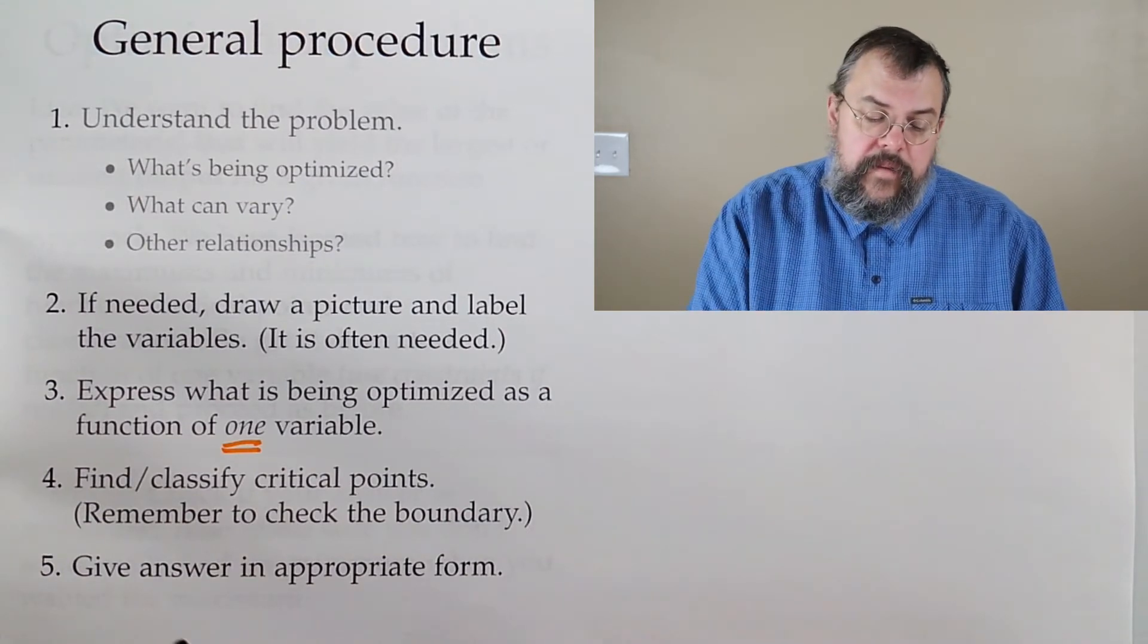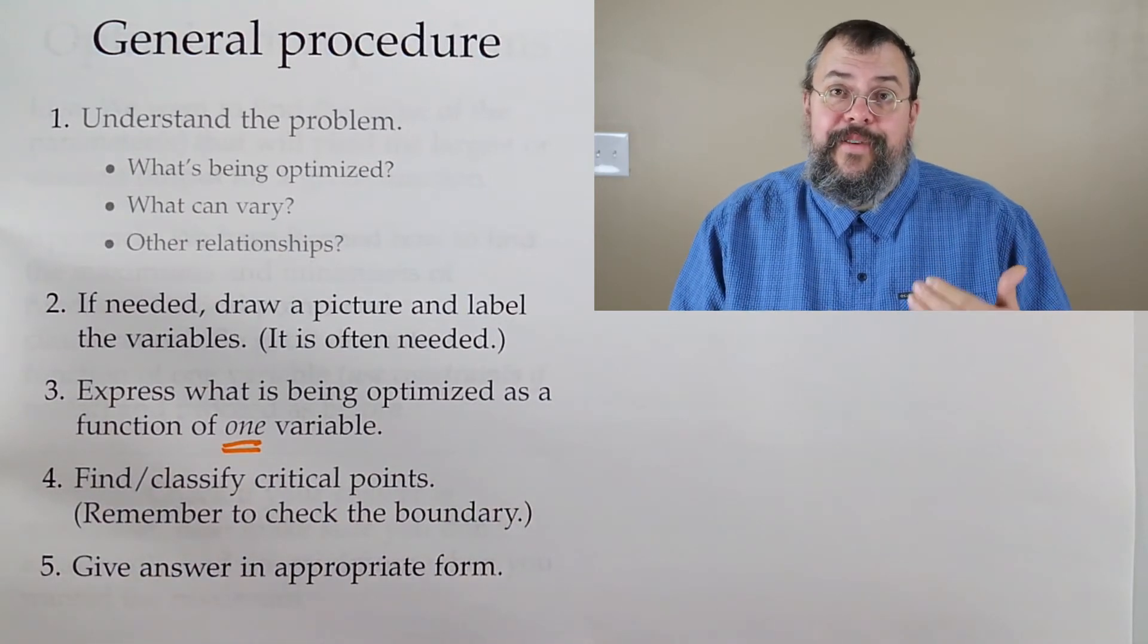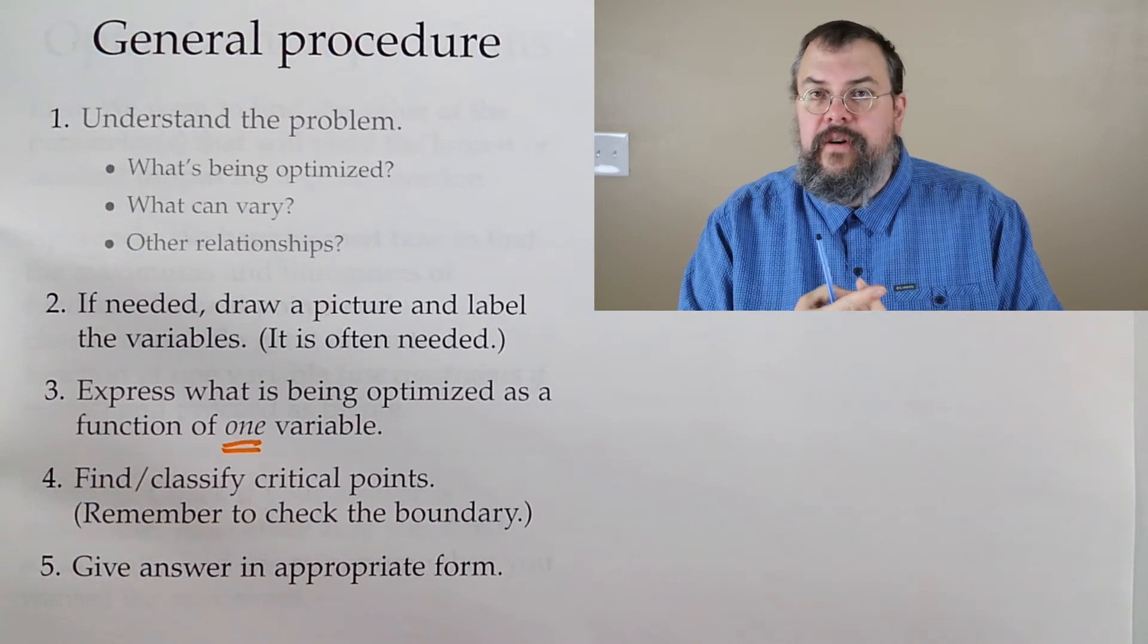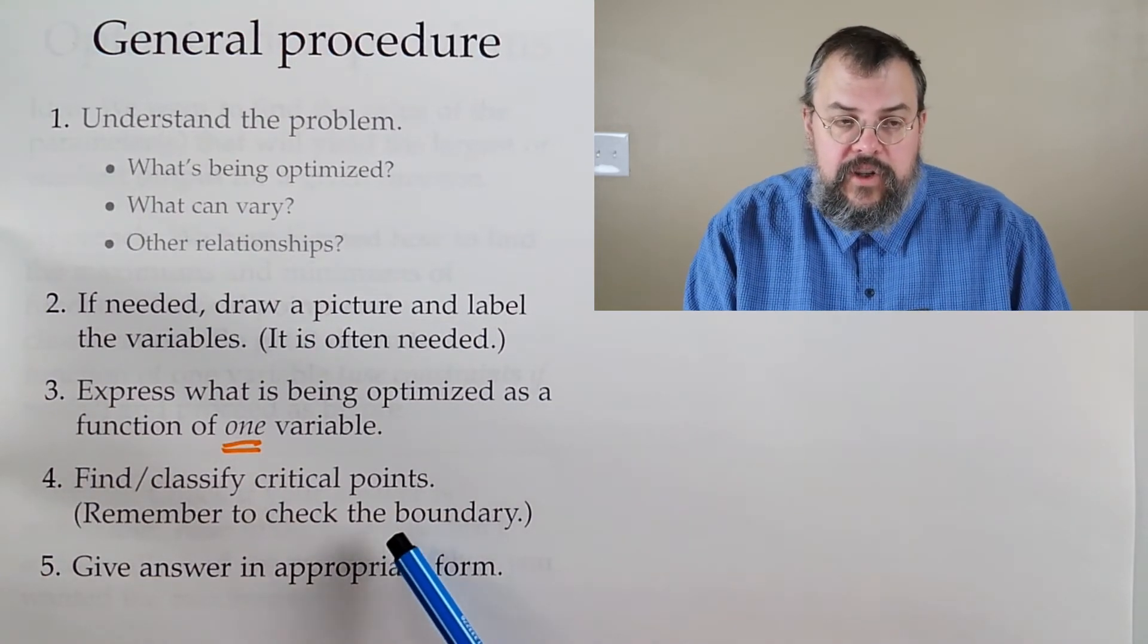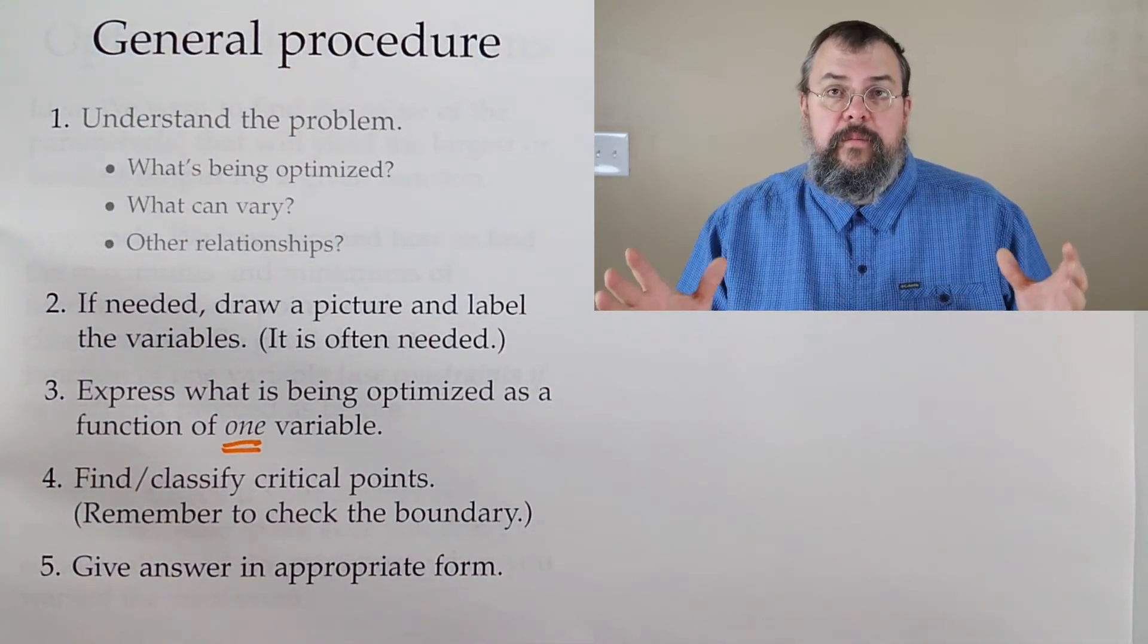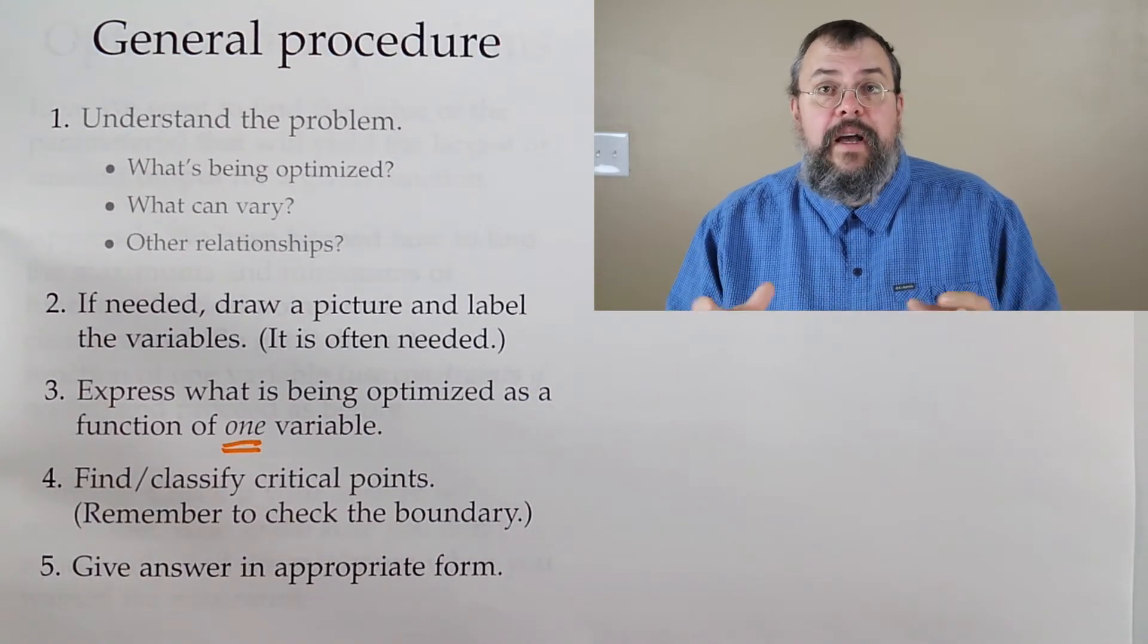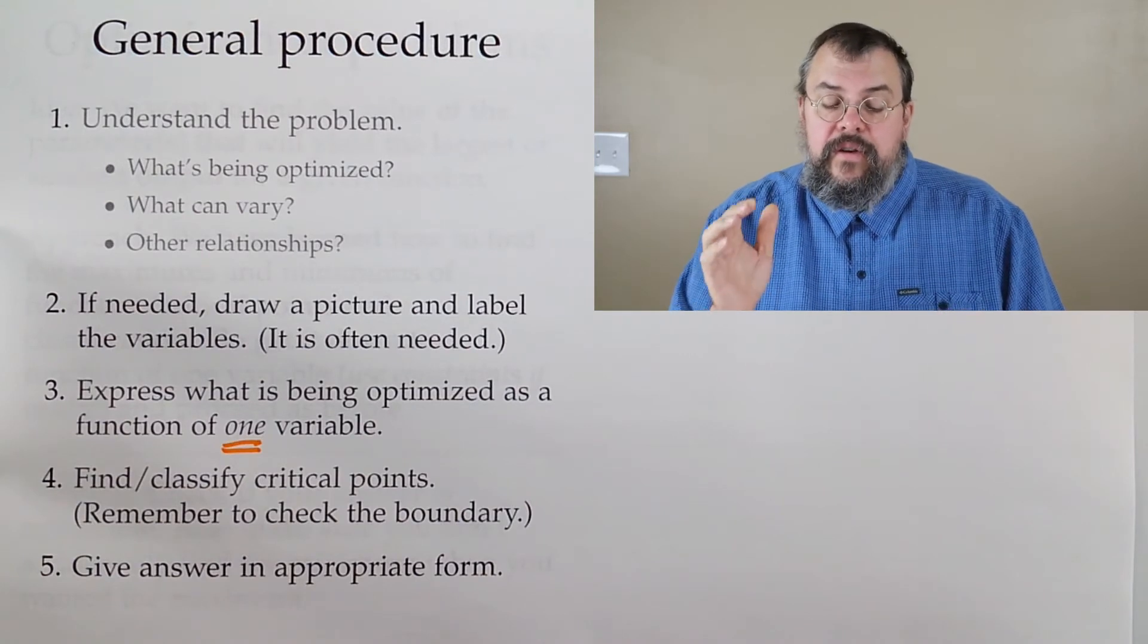Now we're ready to do what we've been learning. How do you find and classify critical points? Take the derivative, set it equal to zero, maybe worry about whether it's undefined. And don't forget to check the boundary. Some problems have a natural boundary built in, and it's possible that the best case scenario is right at the boundary, so you should check.